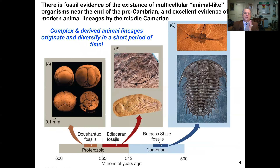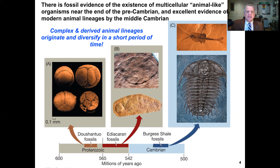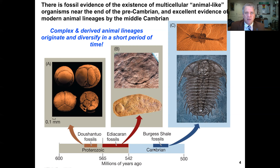We talked about fossil evidence for multicellular animal-like organisms at the end of the pre-Cambrian — the Ediacaran fauna. By the middle Cambrian, we find abundant fossil evidence for complex and derived animal lineages. Much of the diversity of major living animal lineages seems to have originated and diversified in a very short period of geologic time, from about 540 to 520 million years ago — the Cambrian explosion.